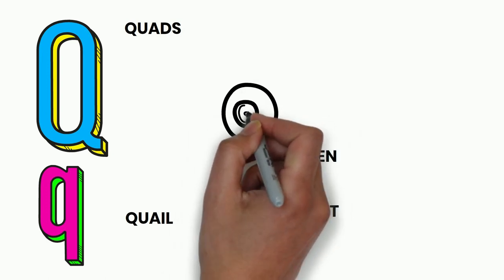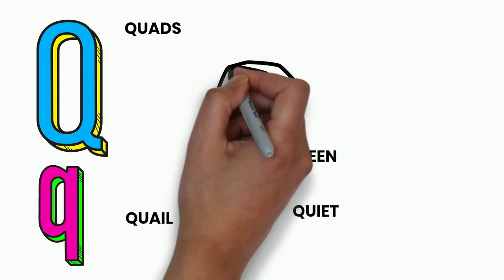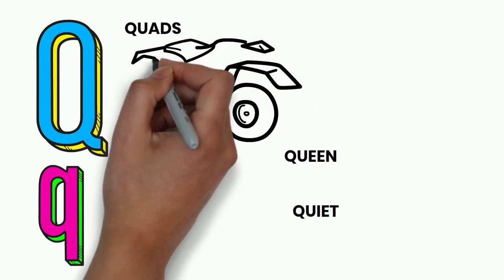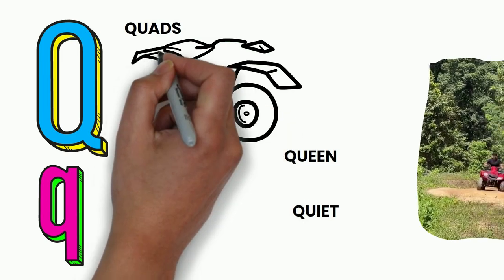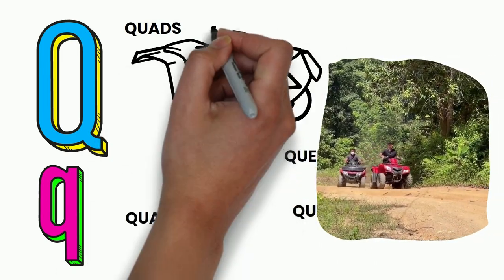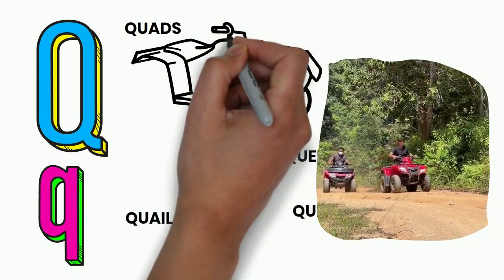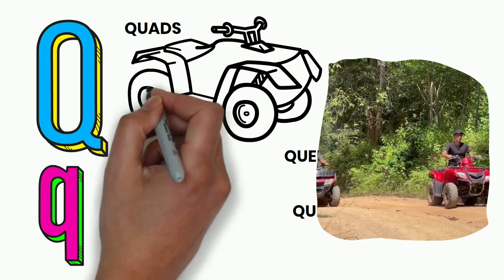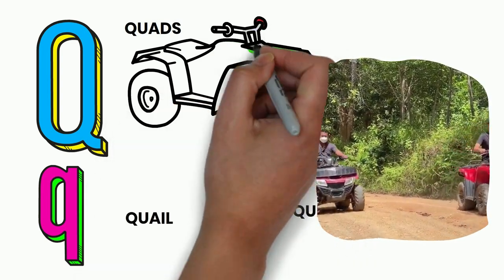Let's draw a quads. W, X, Y, and Z. Now I know my ABCs. Next time won't you sing with me.